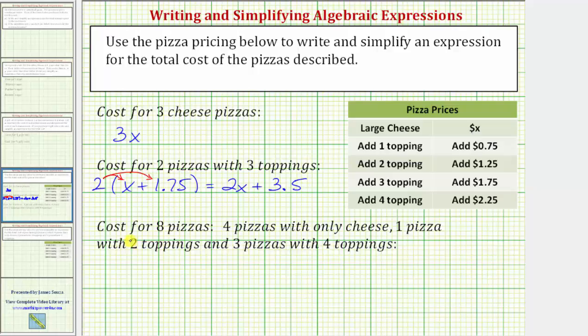For the last example, we want an expression for the cost of eight pizzas: four with only cheese, one pizza with two toppings, and three pizzas with four toppings. So, because each cheese pizza costs x dollars, and we want four cheese pizzas, we begin with the expression 4x for the cost of the four cheese pizzas,